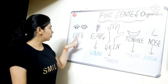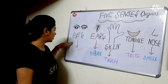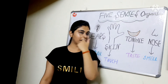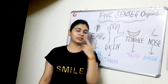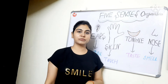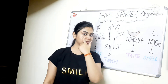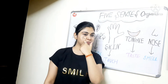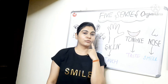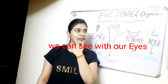Now, first sense organ is eyes. We can see with our eyes. How many eyes do we have? 2 eyes — 1 and 2. We have 2 eyes. We can see with our eyes.